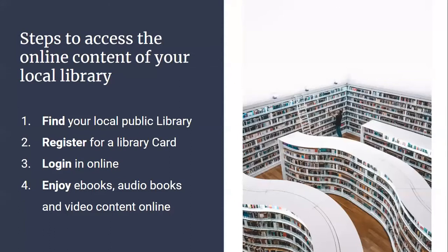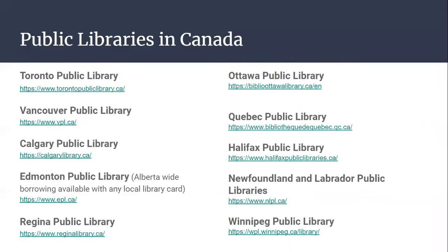In general, the steps to access online content are: first, you want to find your local library depending on what city or town you live in. Then you will register for a library card. Then you can log into their online platform, and then you should be able to have access to ebooks, audiobooks, video content, and all kinds of different resources. Here's just a list of major public libraries in Canada and their websites. Once this presentation is sent to you, you can just access those libraries through the link.